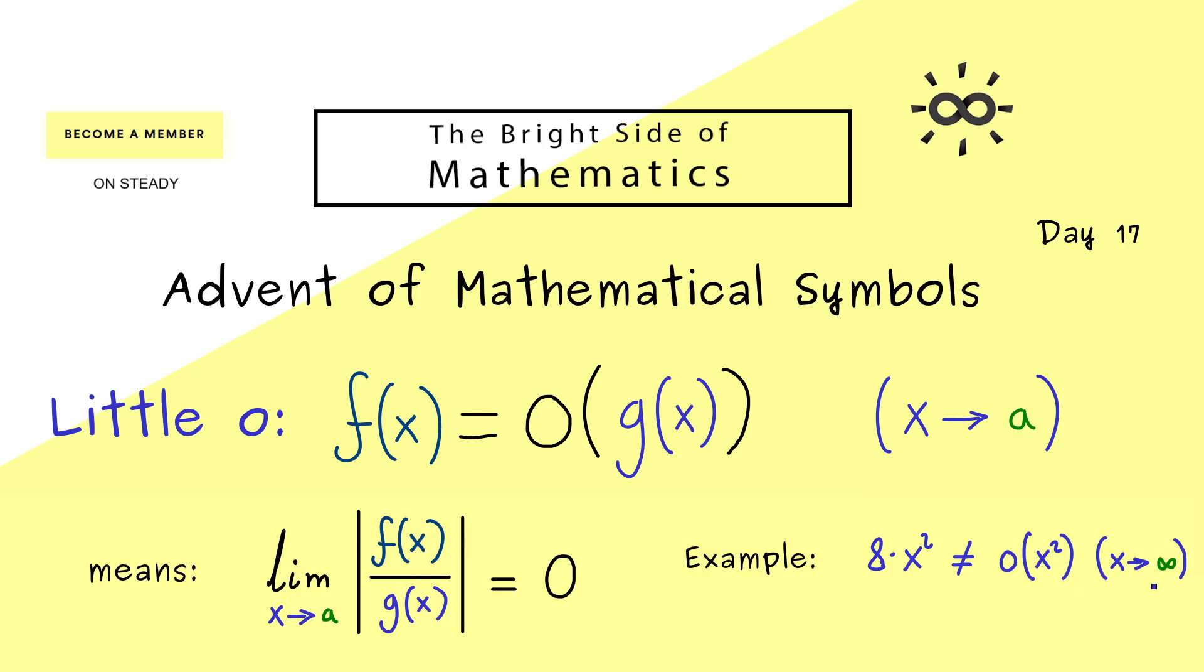However if we consider little o of x cubed we have that the limit goes to 0. So we can say this function 8 times x squared is little o of x cubed.